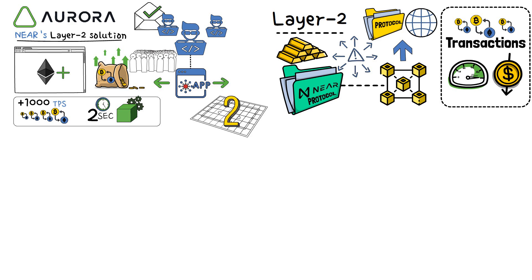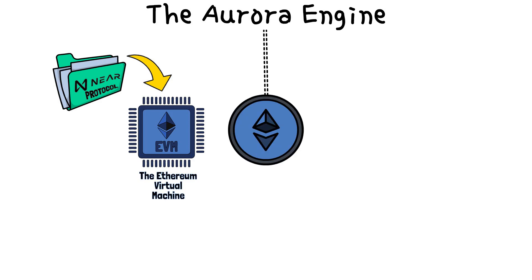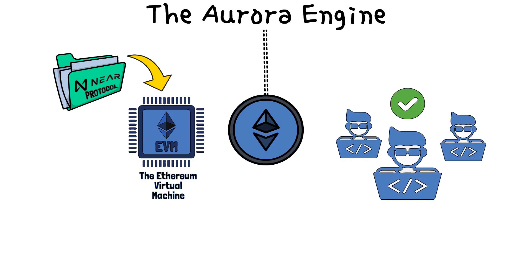So, Aurora's architecture consists of two elements, the Aurora Engine and the Aurora Bridge. The Aurora Engine is an adaptation of the Ethereum virtual machine on the NEAR protocol. It aligns itself with Ethereum, making it possible for developers to use all tools and options that are available to them in the Ethereum ecosystem.